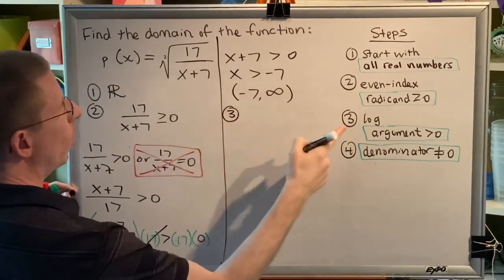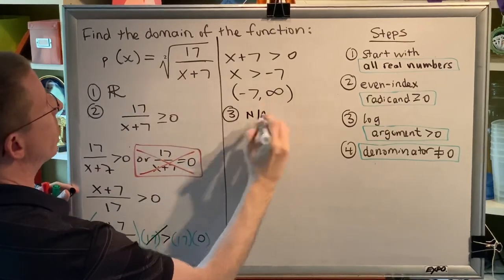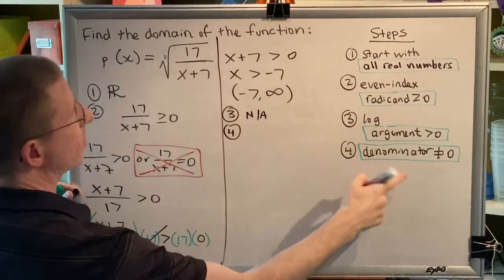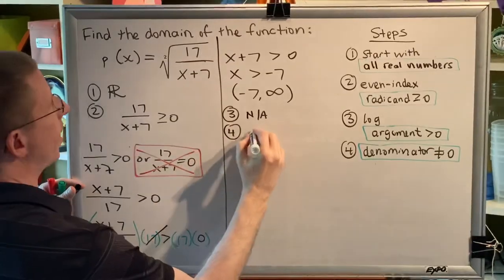Step 3, log arguments greater than zero. There are no log arguments. This step is not applicable. Step 4, denominator is not equal to zero. I do have a denominator. It's x plus 7.